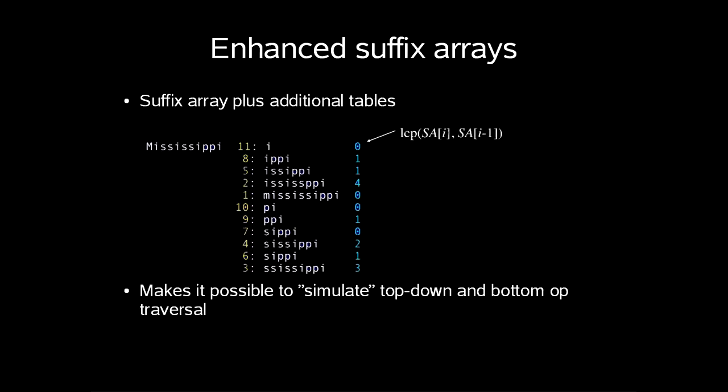To describe this we start with these enhanced suffix arrays, where we have an additional table of N integers calculated as LCP of SAi and SAi minus 1. This makes it possible to simulate top-down and bottom-up traversal of suffix trees and the concept of suffix lengths.